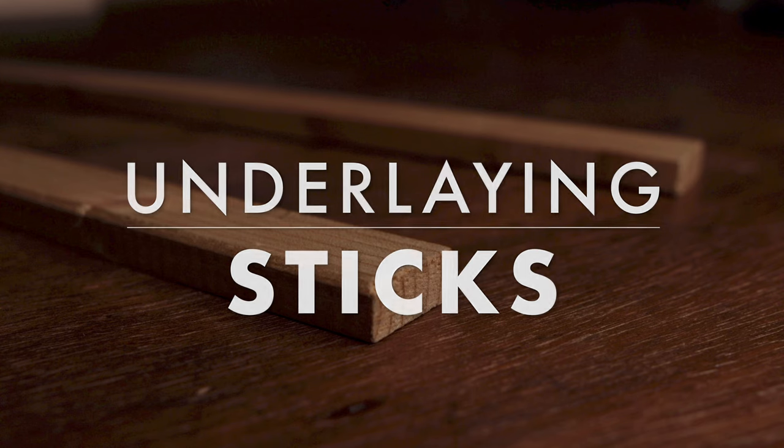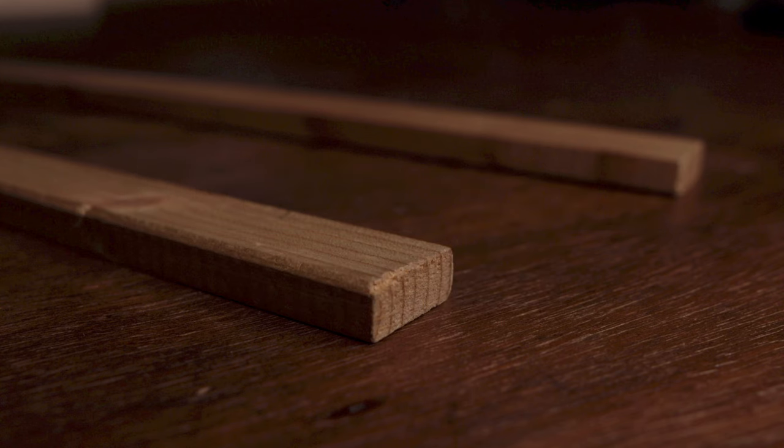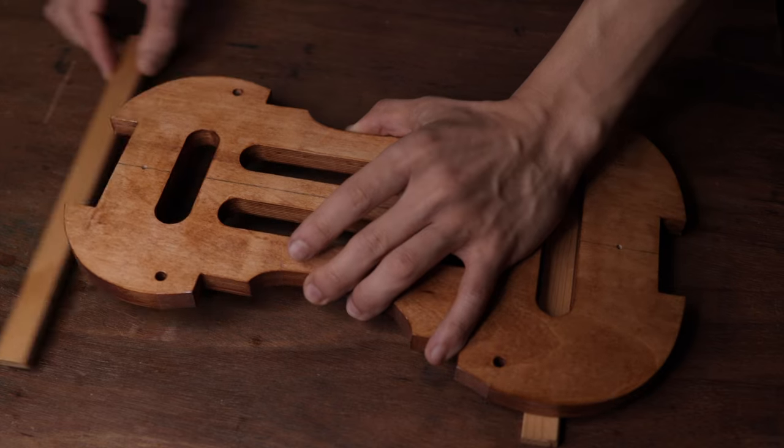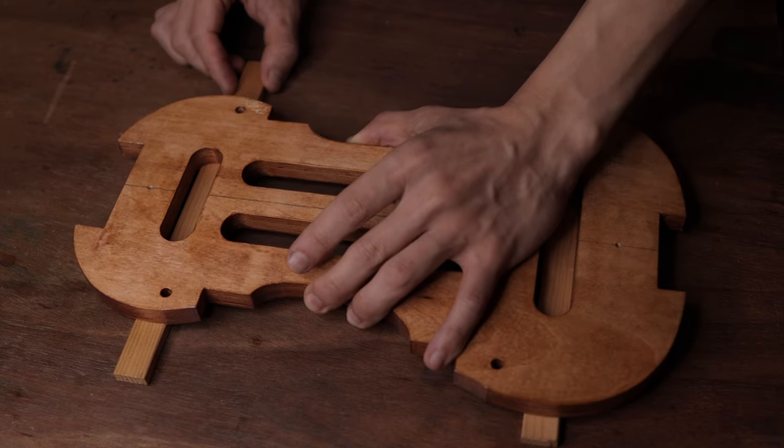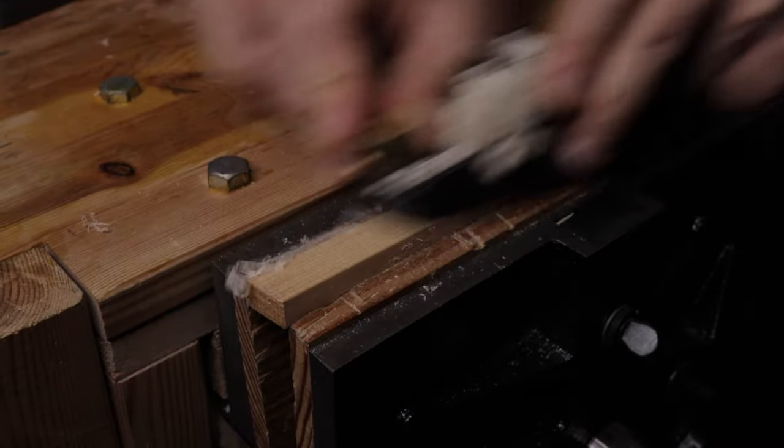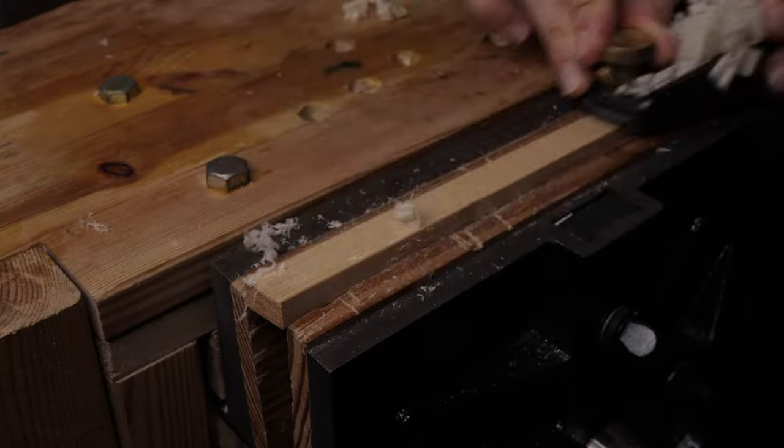If this is the first time you're making a violin, you'll have to first make two underlying sticks. They're just two sticks 8mm thick and wide, and long enough for the form to rest on. You can use any type of wood you want. I use pine as I happen to have a lot of it. This is actually very good practice for you to get familiar with your tools, as you won't be very sad if you screw it up. You can simply make another one. Just make sure they're 8mm thick.